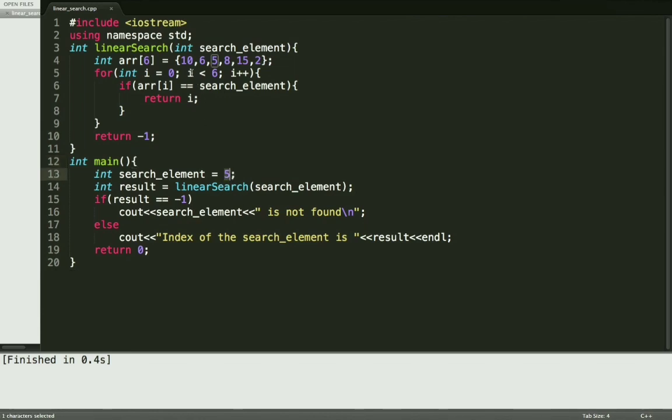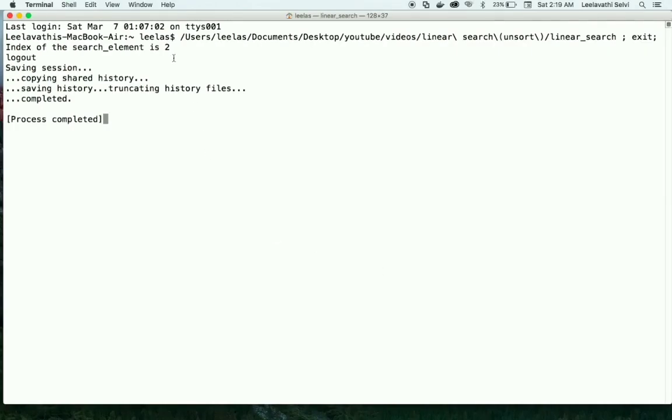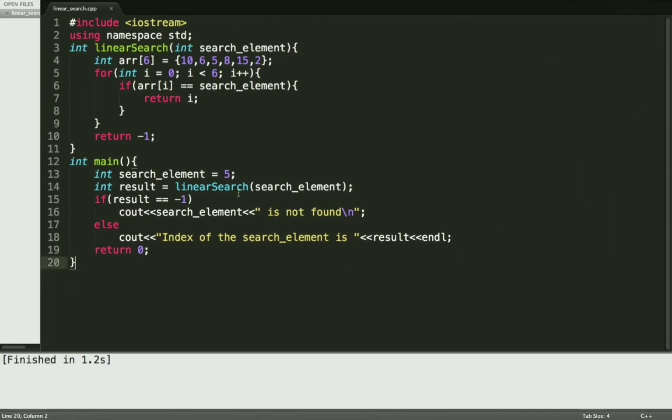Here the 5 is available in this array at position 2, so the expected answer will be index of the search element is 2. So let's run this program and check the output. See, we got the output as 2. Now